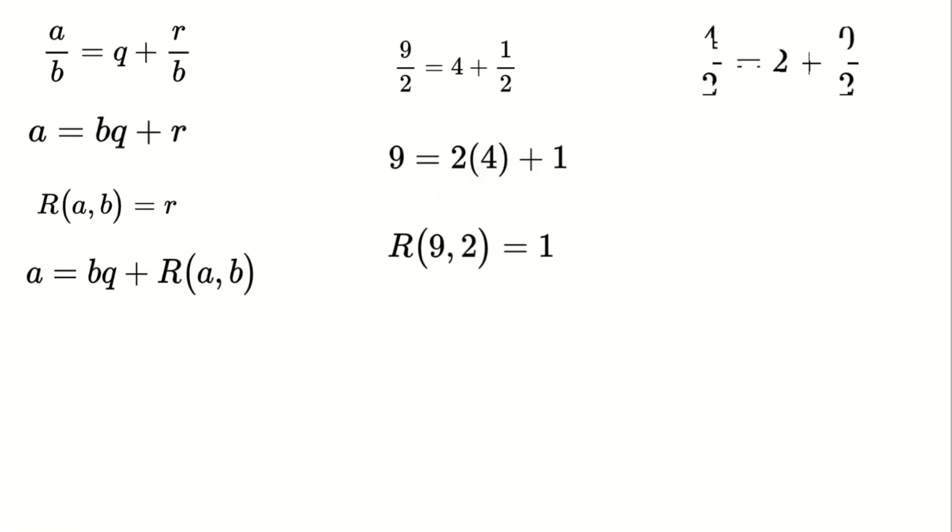Let's try another example, R(4, 2). If we divide four by two, we get two with no remainder. So R(4, 2) equals zero.